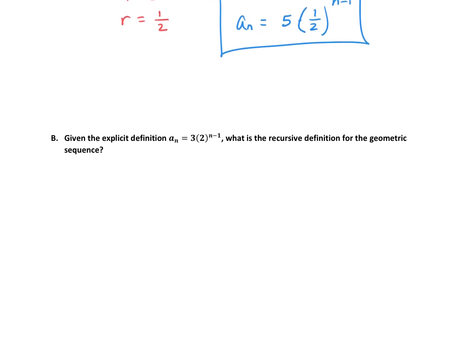Part B: given the explicit definition, what is the recursive definition for the geometric sequence? Again, the two things we need are the first term and the common ratio. When you are given an explicit definition, the common ratio is always the base of that exponent n minus 1, and the number out front is always the first term.